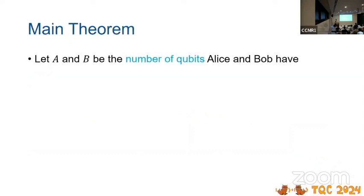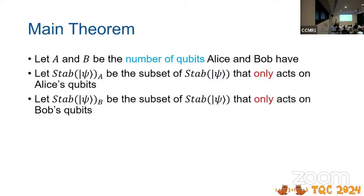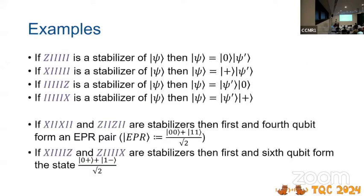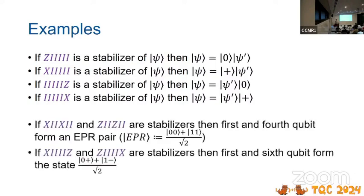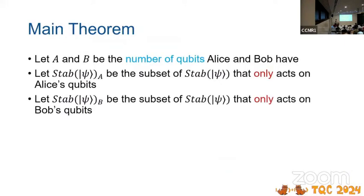So what is the main theorem? Let A and B be the number of qubits that Alice and Bob have. Let stab sub A be the subset of stab psi that only act on Alice's qubits. So if the first three qubits are Alice's, then Z I I and X I I would be in stab sub Alice. These guys would be in Bob's because it only acts non-trivially on the last three qubits. These guys would not be in either of the sets because they act non-trivially on both. These things can be found efficiently, and that will be important for our algorithm.